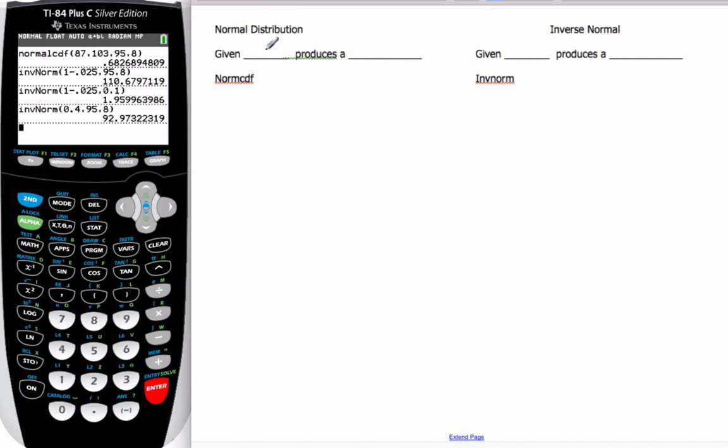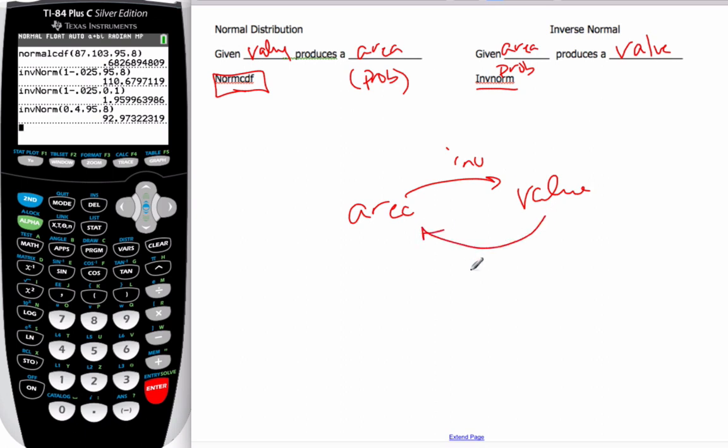If I'm given a normal distribution, I'm always given a value. And that value produces an area or a probability. Then we use normal CDF. If in the problem, I'm given an area or a probability, because those are synonymous in this case, then I want to produce a value, then I use inverse norm. So, area to value is inverse. Value to area is just the regular normal CDF.